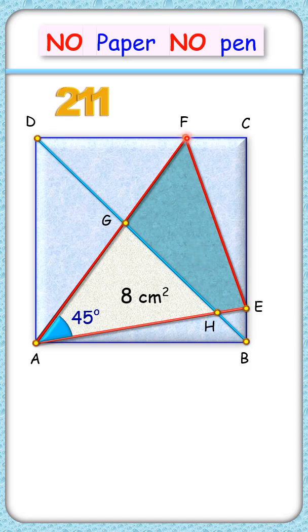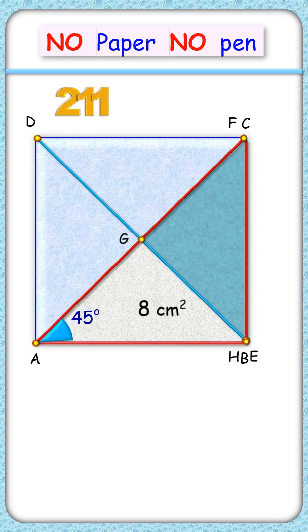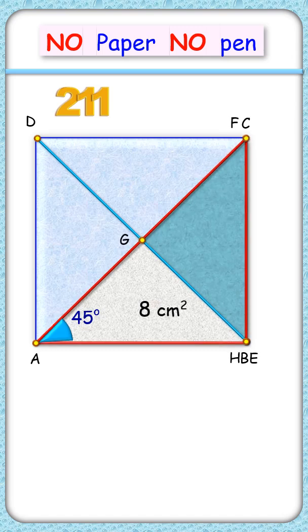Let's shift point F slightly more and match it with point C. This figure still meets all the original conditions, and here we know that the area of the shaded region is 8 cm squared, and that's our answer.